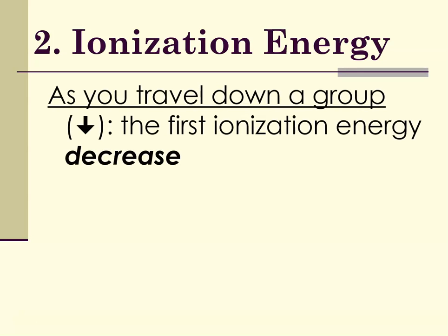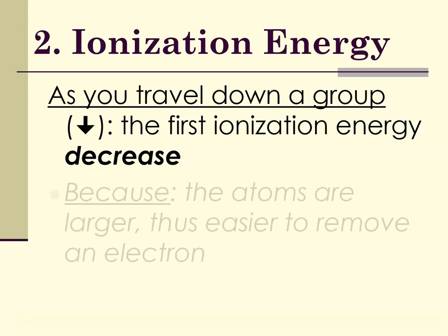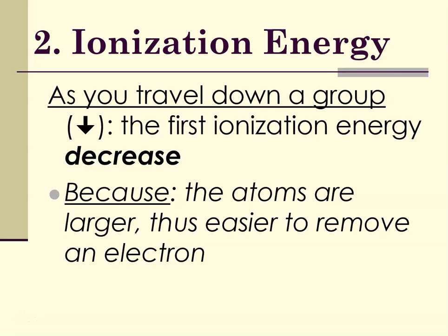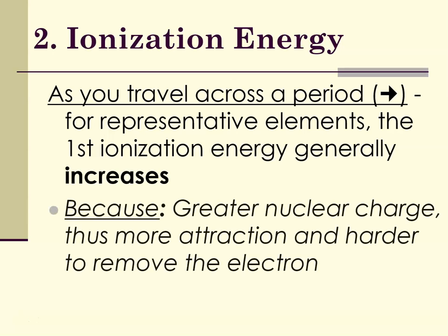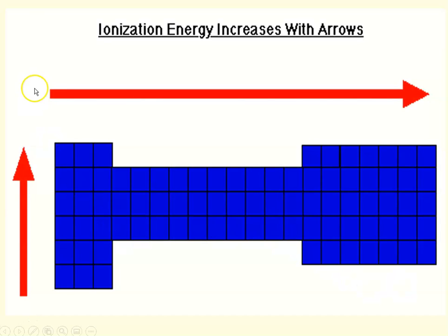As you travel down a group, it's going to become easier and easier to remove electrons because they're farther from the nucleus. So as you travel from top to bottom within a group, the first ionization energy decreases — the atoms are larger and the electrons are farther from the nucleus. As you travel across a period, from left to right the atoms are getting smaller, so for representative elements the first ionization energy will increase because of the greater nuclear charge, meaning the electrons are held more tightly. Ionization energy increases going up and going across.